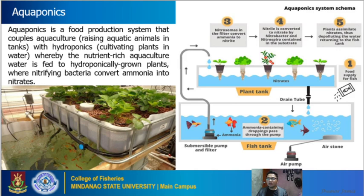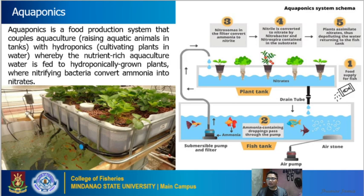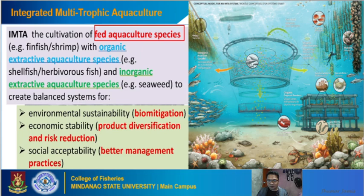Next is integrated multitrophic aquaculture, or IMTA. This is a more complex form of aquaculture utilizing diverse species — from aquatic plants to finfish to mollusks to crustaceans. As seen in the picture, you can see a fish cage filled with finfish, aquatic plants, filter-feeder bivalves, and at the bottom, crustaceans and other bivalves.